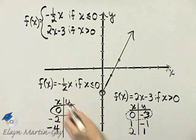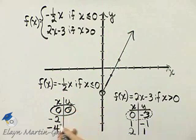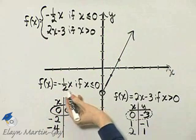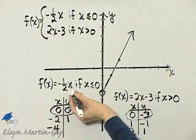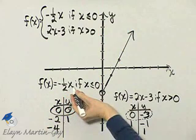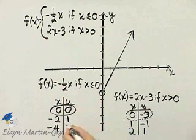If x is zero, then y or f of x is zero. If x is negative two, what's negative one-half times negative two? That's a positive one. And if x is negative four, a negative times a negative is a positive, and one-half of four is two.